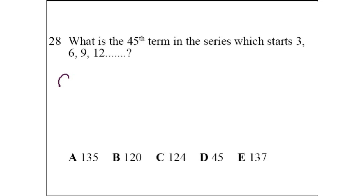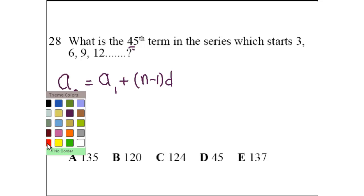We know that any term a_n, n is the nth term, so if we're talking about the 45th term that means a_45, equals a_1, the very first term in this series, plus n minus 1, the number of the term you're looking for, minus 1, times d, and d is the difference between any two consecutive numbers in this series.